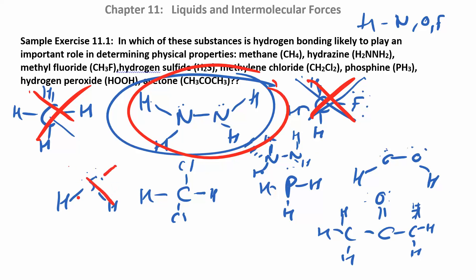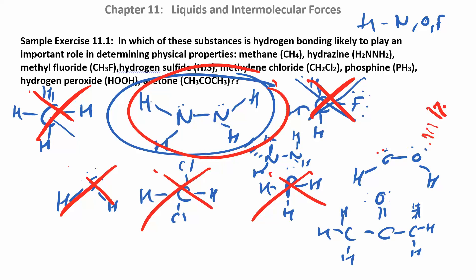Does H2S have hydrogen directly attached to oxygen, nitrogen, or fluorine? No. Methylene chloride does not either. Hydrogen peroxide — H-O-O-H — yes! The oxygen will be attracted to the hydrogen on another molecule, so it forms hydrogen bonds. Acetone cannot form hydrogen bonds with itself, but it could form a hydrogen bond with water, since water provides the H attached to O that acetone's oxygen can interact with.